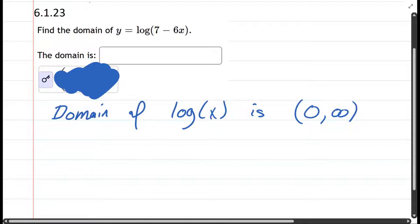Now, of course, we don't have log x. We have log of seven minus six x, so we're going to look at the inside part. Now, we need the inside part to be greater than zero.